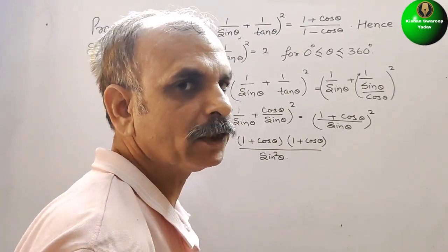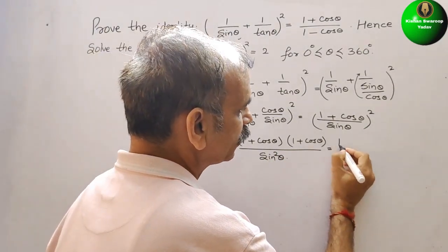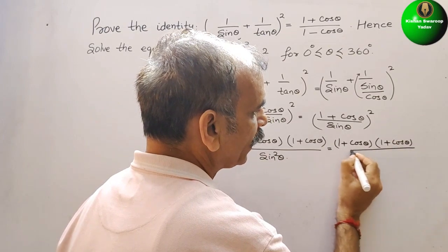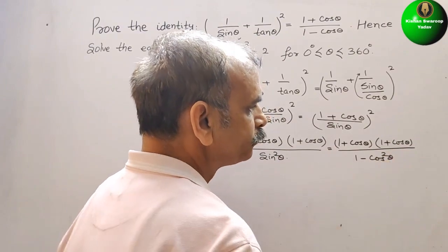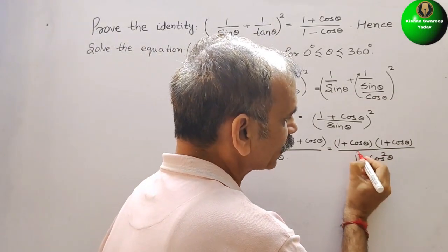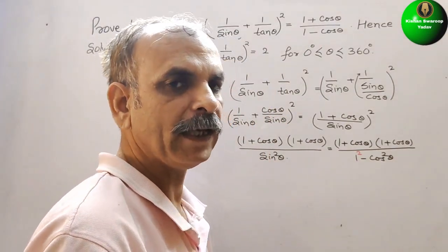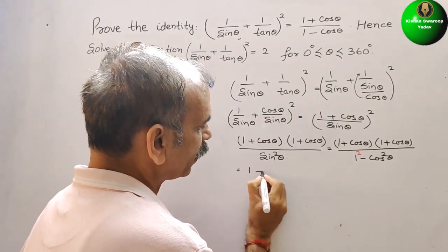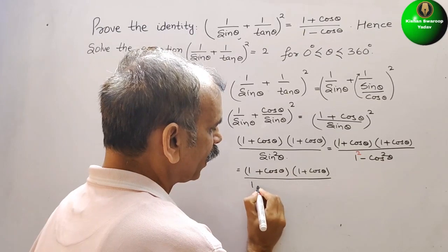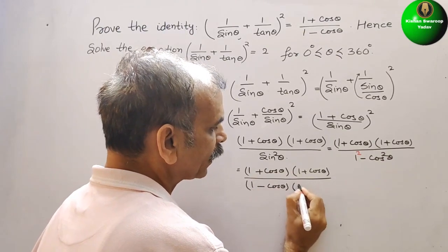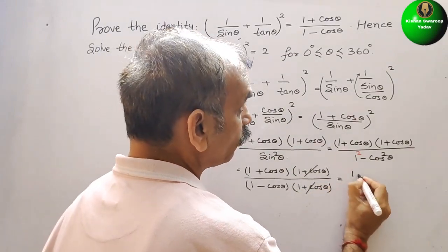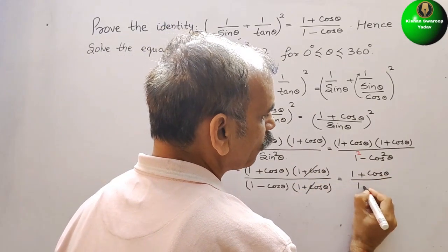We know that sin²θ = 1 − cos²θ. So we write (1 + cos θ)(1 + cos θ) / (1 − cos²θ). Since 1 − cos²θ is in the form (a − b)(a + b) = (1 − cos θ)(1 + cos θ), one factor of (1 + cos θ) cancels.